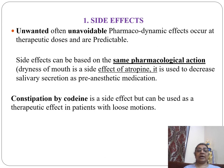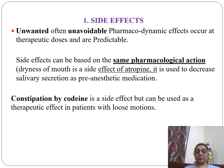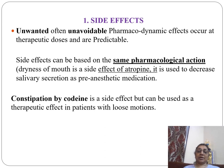A side effect is an unwanted but unavoidable pharmacological effect of the drug occurring at the therapeutic dose. It is predictable and based on the same pharmacological action. For example, dryness of the mouth is a side effect of atropine, but it can be used therapeutically in pre-anesthetic medication to decrease salivary secretion. Another example: constipation caused by opioids is a side effect that can be used therapeutically in patients with loose motions.